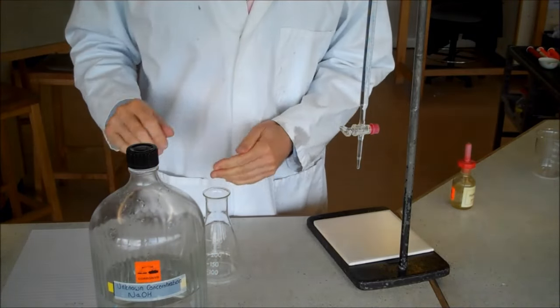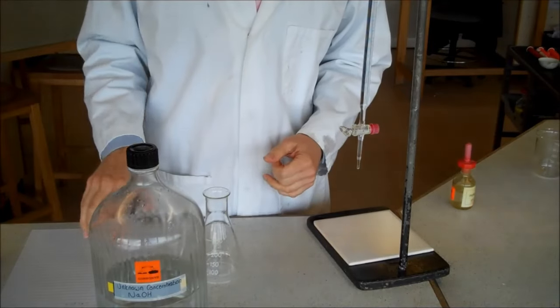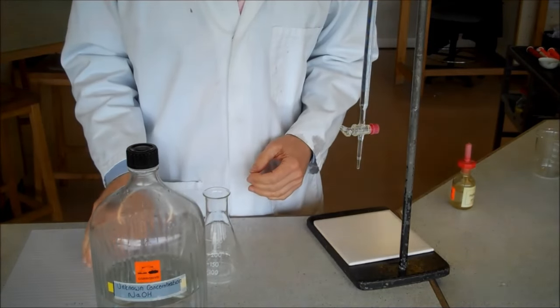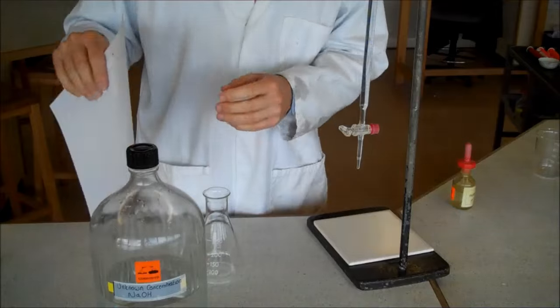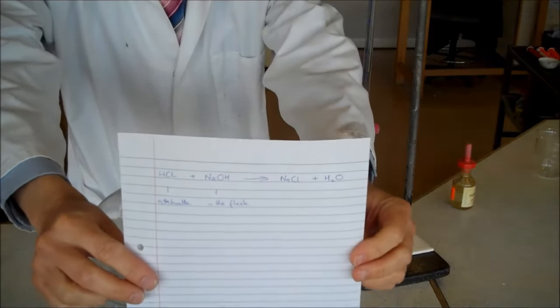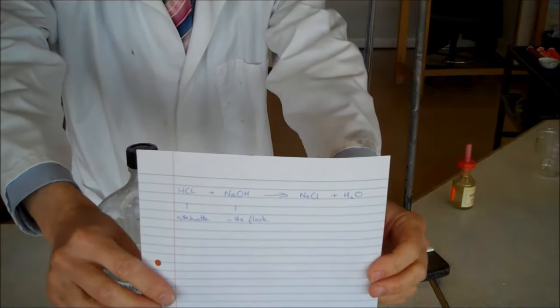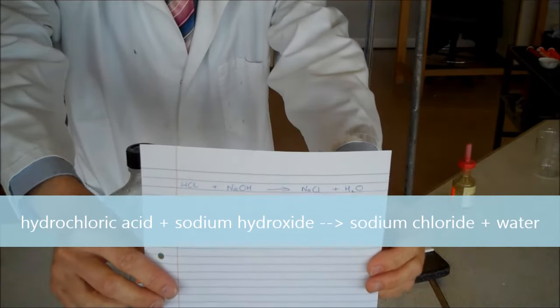This is the first step in making a salt from a soluble base, an alkali, and an acid. The reaction I'm going to do is hydrochloric acid plus sodium hydroxide. Both of those are soluble.